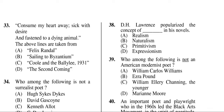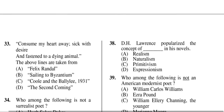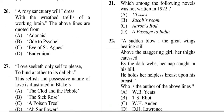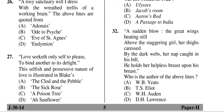Question thirty-three: 'What consume my heart always, sick with desire and fastened to a dying animal' — the above lines are taken from B — 'Sailing to Byzantium' by Yeats. Question twenty-seven: 'Love seeks only self to please, to bind another to its delight' — this selfish and possessive nature of love is illustrated in Blake's which poem? The answer is A — 'The Clod and the Pebble.'